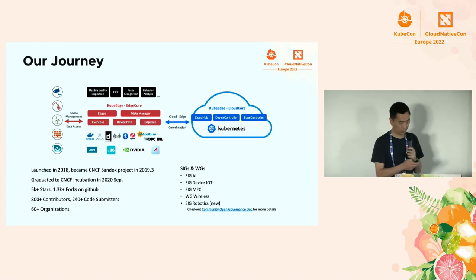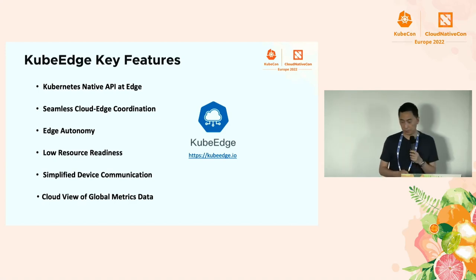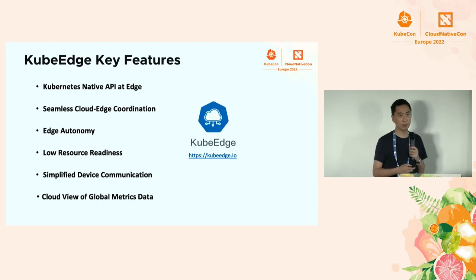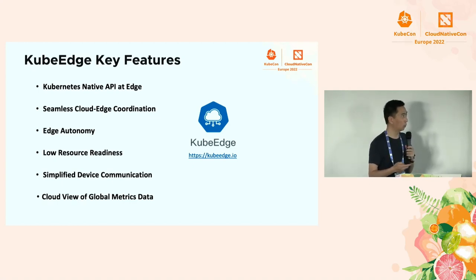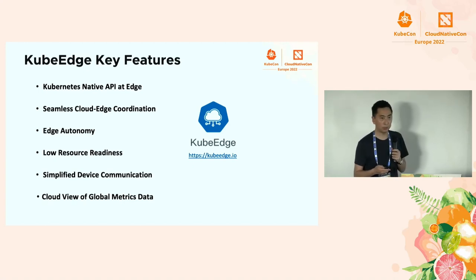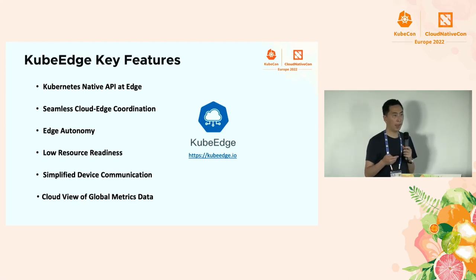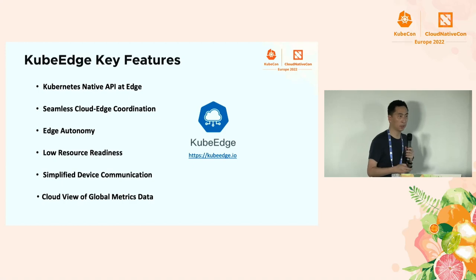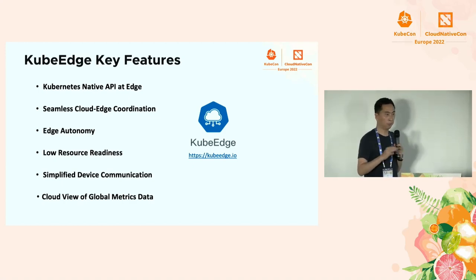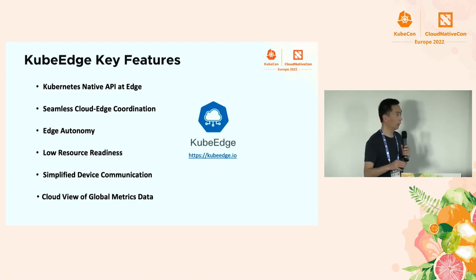KubeEdge supports native Kubernetes APIs. When you deploy an app to the edge, you can use Kubernetes directly — it's transparent to developers. You won't see any difference whether you deploy an app to an edge node or to a node in a data center. We also allow mixed deployment of edge nodes and data center nodes, and we have seamless edge-cloud coordination handled transparently by the framework.